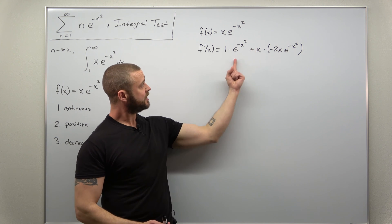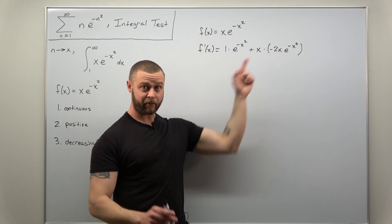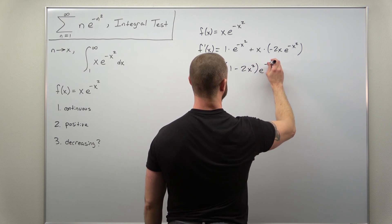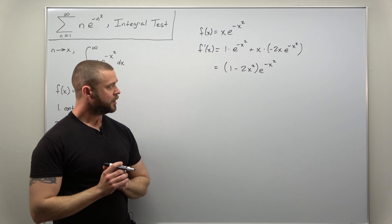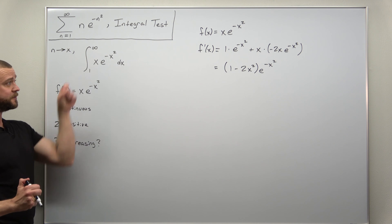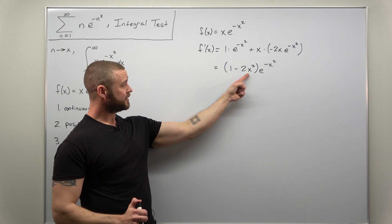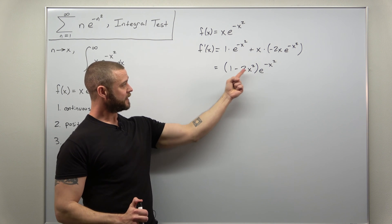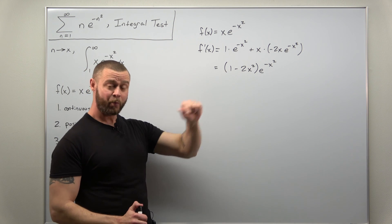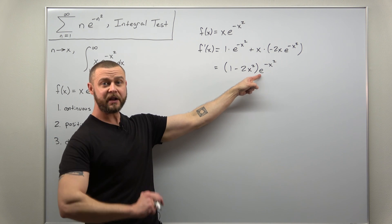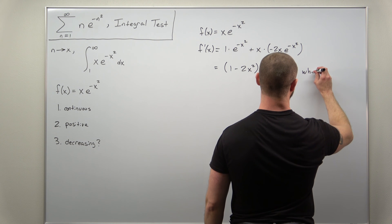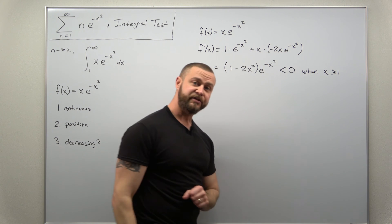We can simplify by multiplying x and negative 2x, then factoring e to the negative x squared out from both terms. The derivative simplifies to (1 minus 2x squared) times e to the negative x squared. On the interval from 1 to infinity, as soon as x is 1 or greater, 2x squared is bigger than 1, so we're subtracting a number greater than 1 from 1 — this is definitely negative. And since exponential functions are always positive, the derivative is negative when x is greater than or equal to 1.